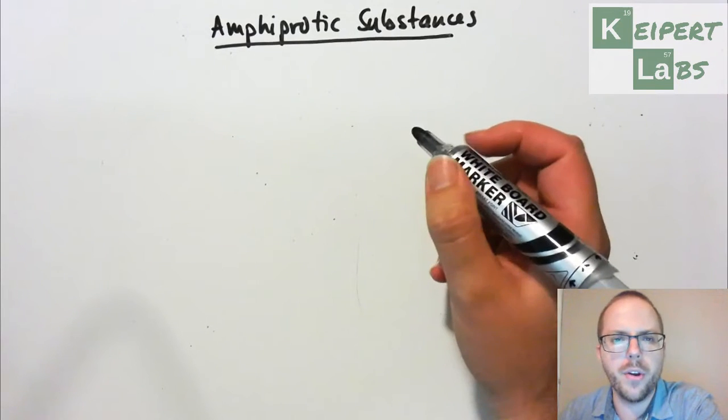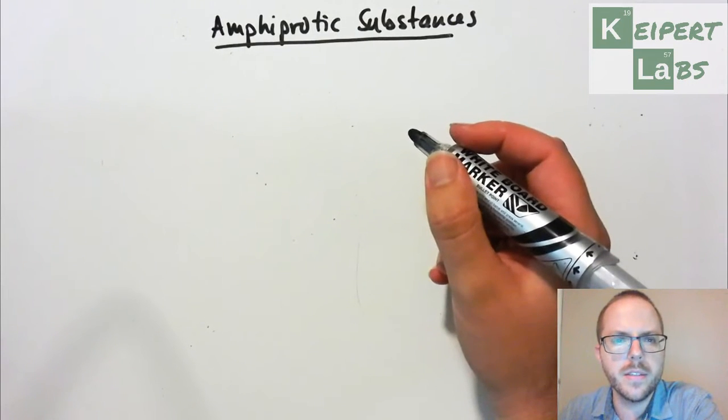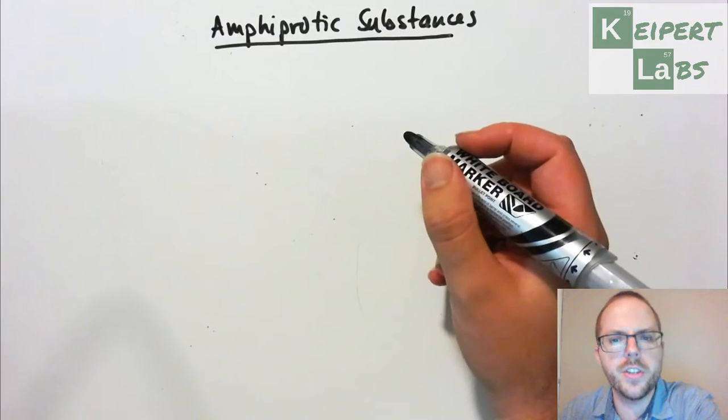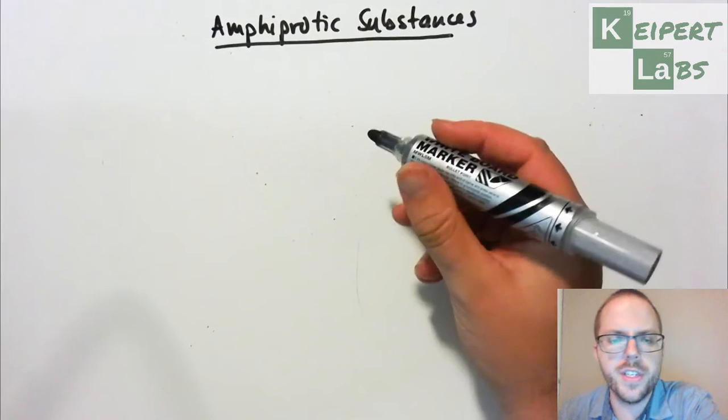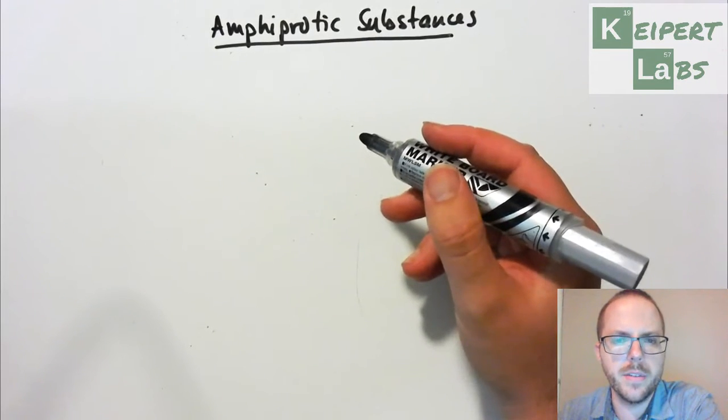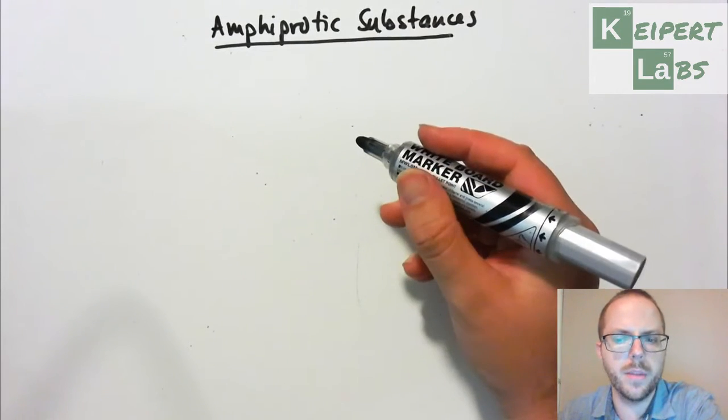We've been talking about the Lowry-Bronsted theory of acids and bases. We've gone over some definitions, some examples of reactions, proton transfer reactions. We introduced the idea of conjugate acid-base pairs and we looked at that in a bit more detail in the previous video.